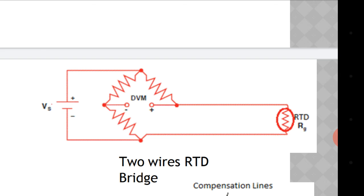The RTD sensing portion is inserted into the liquid whose temperature is to be measured. If temperature increases and we are using PTC (positive temperature coefficient), the resistance of the RTD will also increase. The other three resistors in the circuit are of fixed values so they cannot change, meaning the RTD changes based on temperature, the bridge becomes unbalanced, and we get the potential difference.